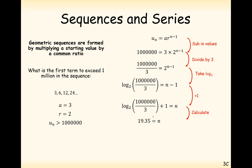So 19.35 would be the exact value to make the sequence term equal to a million. The next value greater than a million is the 20th term, so the first term to exceed 1 million will be the 20th term — it gets there relatively quickly considering we're starting with very small numbers.